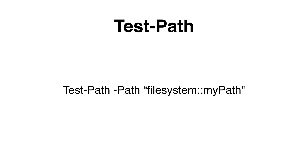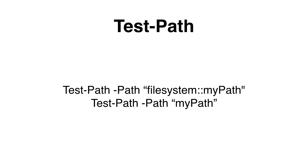The first commandlet we're going to look at is Test-Path. With this commandlet we can see if a directory exists or not. To use it we need to specify the path. The proper way is to specify the file system colon colon and then the path to the directory. To do less typing, we can achieve the same by only specifying the path to the file system without the file system colon colon attached to it.